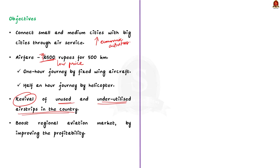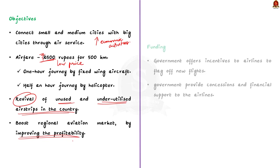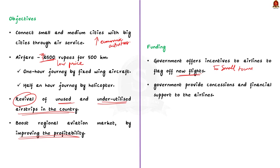The scheme also aims to boost the regional aviation market by improving the profitability of underdeveloped regional routes. The government offers incentives to airlines to start new flights to neglected smaller cities and towns. Through this discussion, we learned about the flagship UDAN scheme of the Civil Aviation Ministry and its objectives.